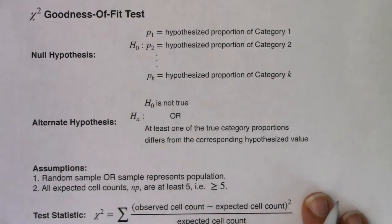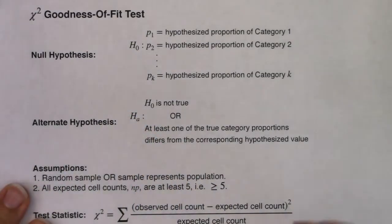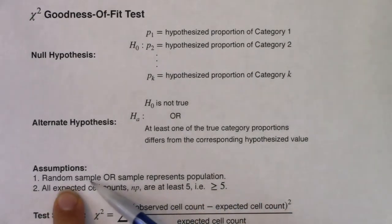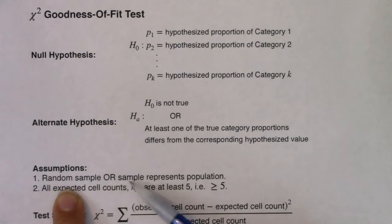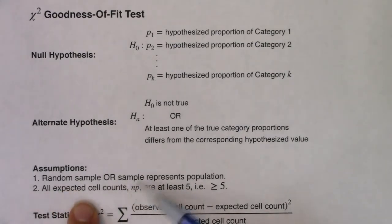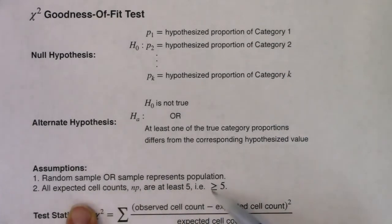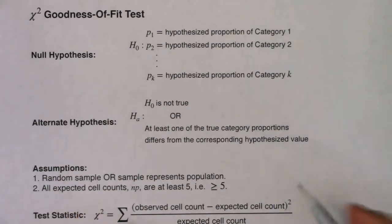For assumptions, they change here. Like always, you have either a random sample or your sample represents your population. But the deal breaker looks completely different. Here, we need all expected cell counts — all the NPs that we calculate — to be at least five, meaning greater than or equal to five. This right here is the deal breaker assumption.